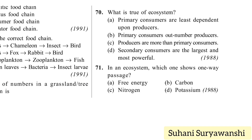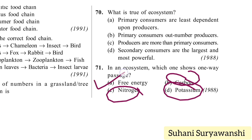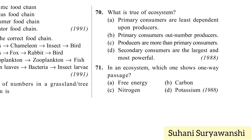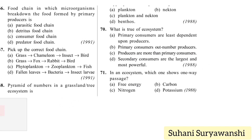In an ecosystem, which one shows one-way passage? Carbon, nitrogen, and potassium all show cycles, so there is no one-way passage. Energy always shows one-way passage or unidirectional flow — option A. In this way we have completed all 71 MCQs which are PYQs for NEET. Thank you so much for watching this video, see you in the next video.